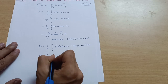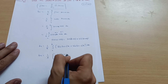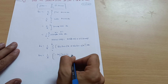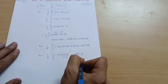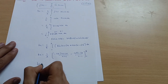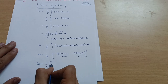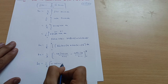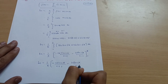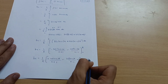Proceeding with integration: b_n = (1/π) times [ −cos((n+1)x)/(n+1) − cos((n-1)x)/(n-1) ] evaluated from 0 to π. Applying the upper limit π and lower limit 0, we get: −cos((n+1)π)/(n+1) − cos((n-1)π)/(n-1) minus the lower limit terms −cos(0)/(n+1) − cos(0)/(n-1).